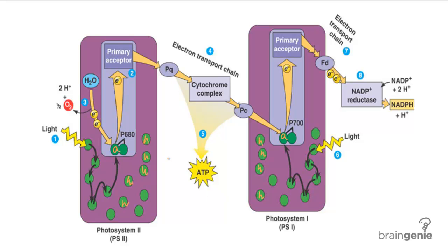The main two products of phosphorylation are ATP and NADPH. If you remember how ATP was produced in cellular respiration, it's pretty much the same process in photosynthesis. Electrons flow down an electron transport chain, and the energy generated from this flow is used to pump protons — creating a proton gradient. Rather than within the intermembrane space of the mitochondria, this gradient is created between the stroma and the thylakoid space, and the protons flow through ATP synthase to create ATP.